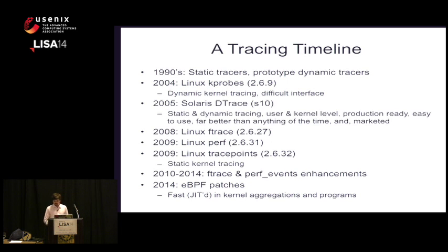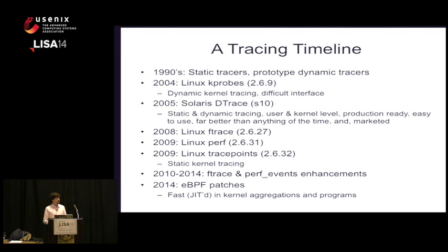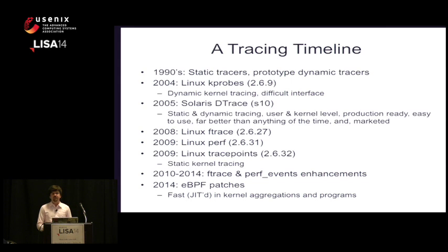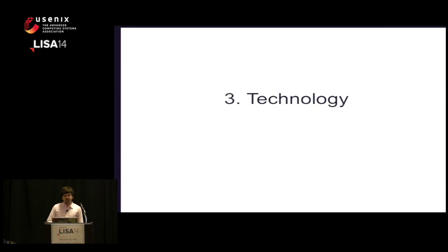To give you the background tracing timeline: in the 1990s there was static tracing and prototype dynamic tracing. By 2004, Linux had kprobes so it could do dynamic kernel tracing, but the interface was really difficult and it didn't catch on. 2005 was Solaris DTrace — static and dynamic tracing, user and kernel level, production ready, easy to use, and it was marketed. Since then: Linux ftrace in 2008, Linux perf in 2009, Linux trace points, and many ftrace and perf events enhancements over the past five years. Now eBPF is being added, which allows custom in-kernel aggregations with JIT instrumentation.